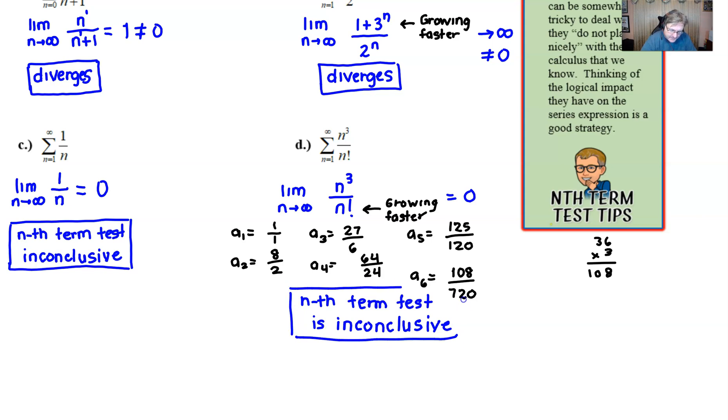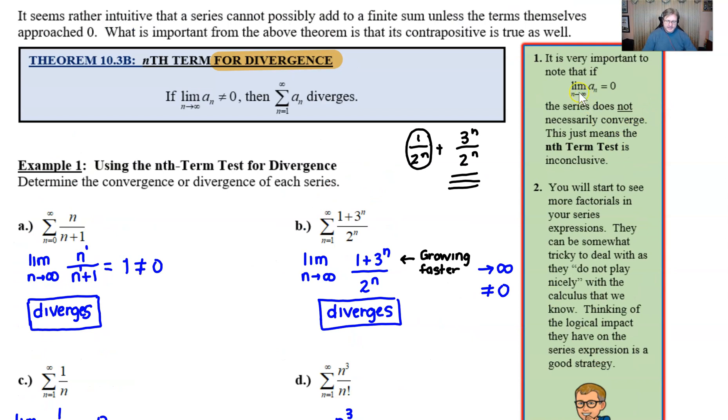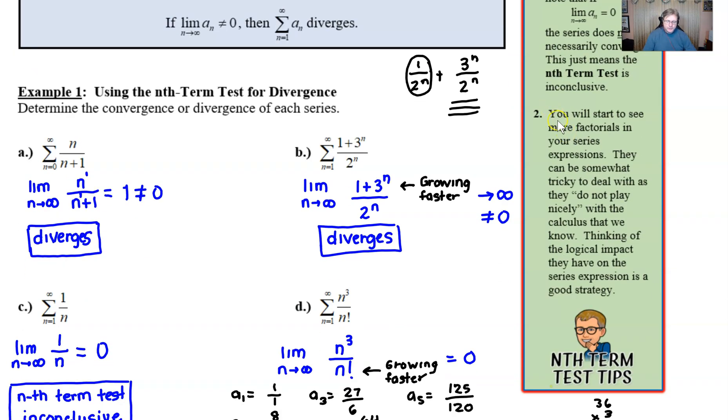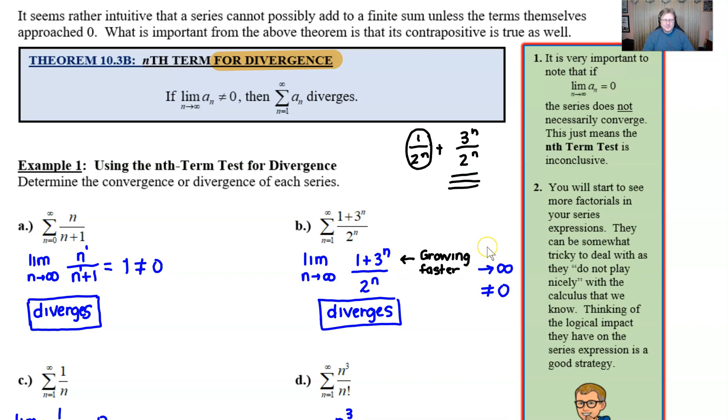So for now, what is it that we want to think about with the nth term test? Well, it's very important to note that if the limit of a sub n as n approaches infinity is 0, the series does not necessarily converge. It's just going to mean that the nth term test is inconclusive. And then secondly, you're going to start to see more factorials in your series expressions. And they can be a little tricky to deal with. They don't play nicely with calculus, as I like to say. So it's really important that you think of the logical impact that they would have on the series expression and then use your sense of numbers. This takes care of our probably shortest test, the nth term test for divergence. I hope it makes sense. I'd like you to practice it a little bit and then we're going to move on for our next test, the integral test in topic 10.4. Thanks for joining.